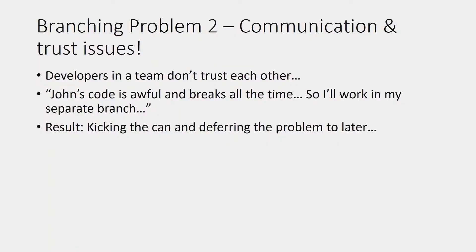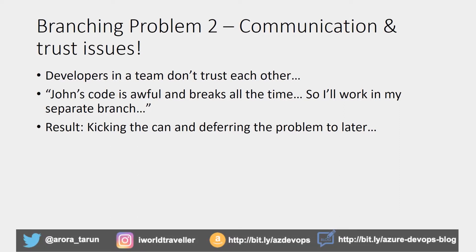The second most common anti-pattern with Git is more of a communication and trust issue. You've got a bunch of developers on the team, and one developer doesn't like talking to the other. The classic example: Adam says John's code is awful and breaks all the time, so rather than working on the same branch for the feature with him, he creates a separate branch for himself. But you're just kicking the can further down the road, because when you start to integrate the changes back from your branch into John's branch, you still pay the price of integrating with those so-called awful changes.